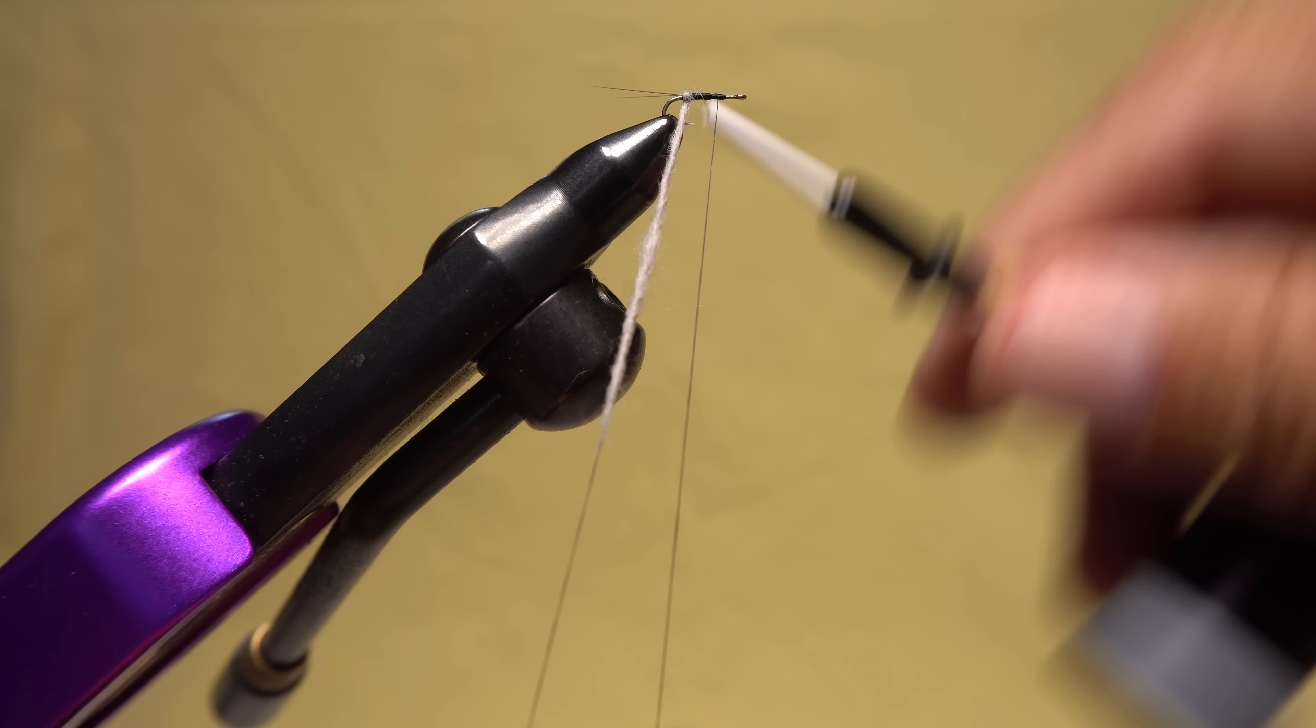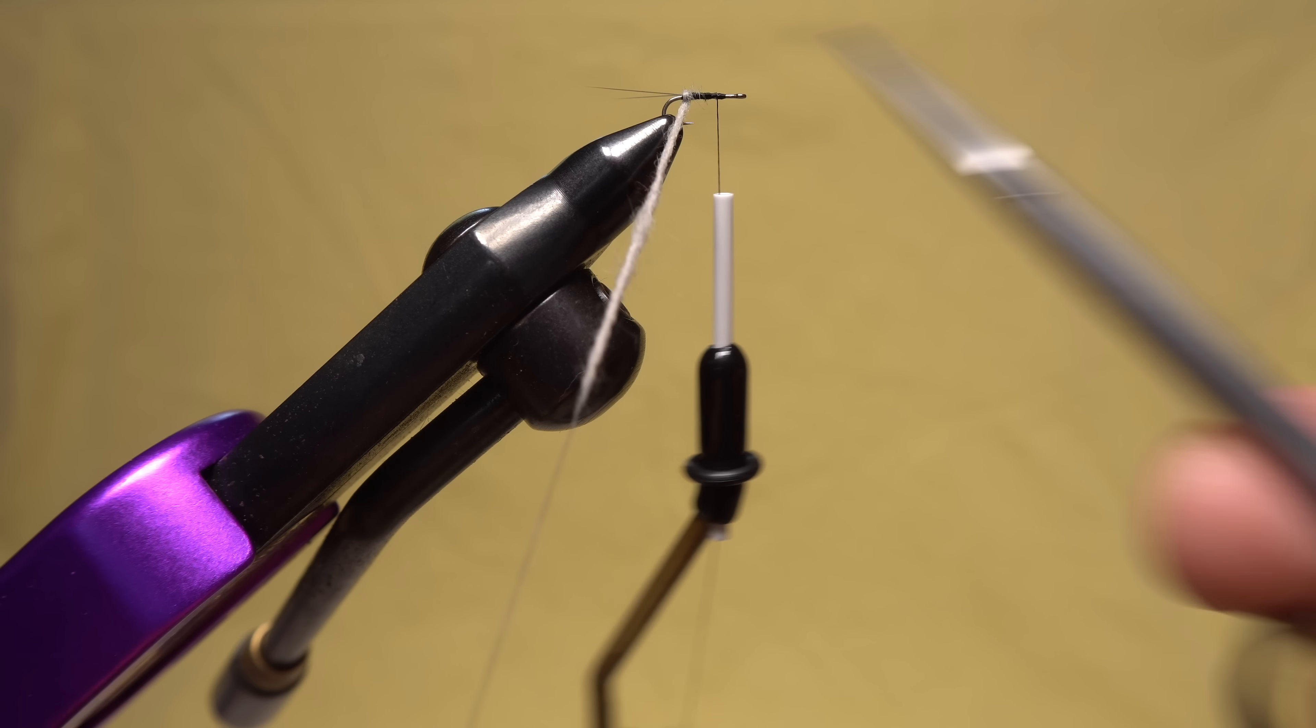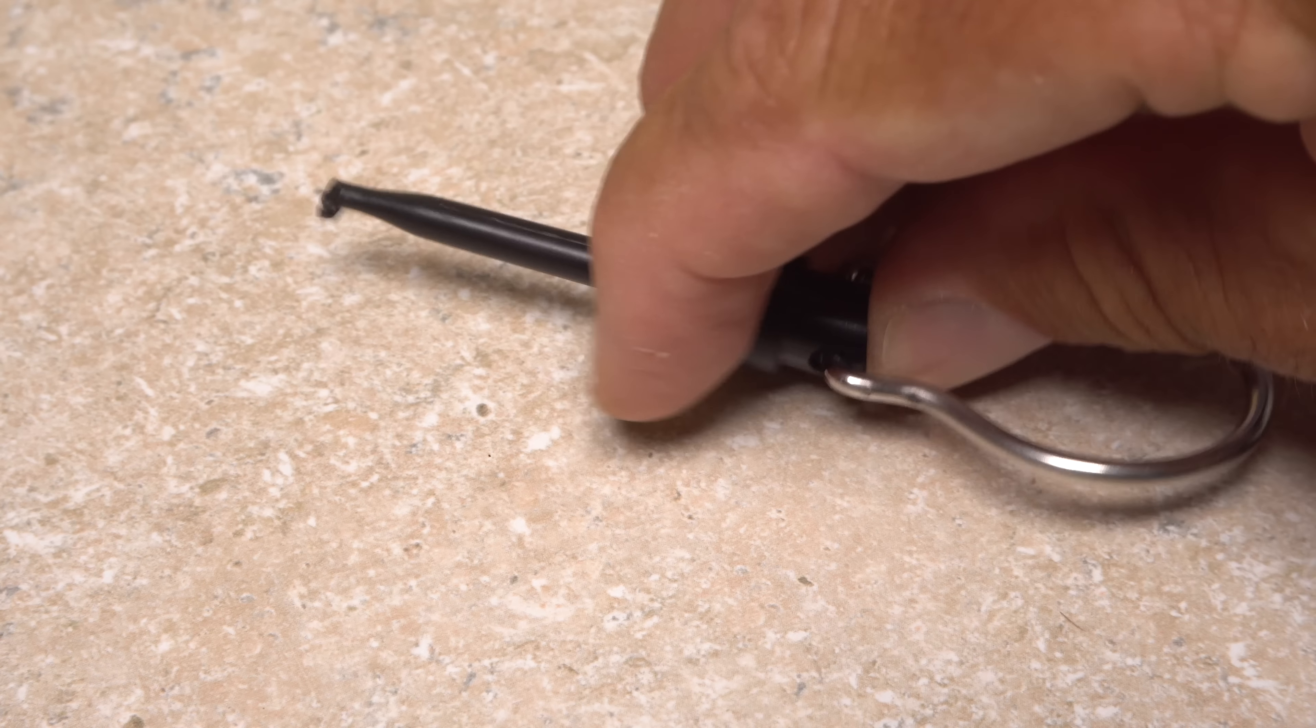Pull down on your bobbin to form a loop of thread, then bring your bobbin back up to the initial tie-in point and take a few wraps rearward to secure the thread there and snip the thread that forms the loop off close.